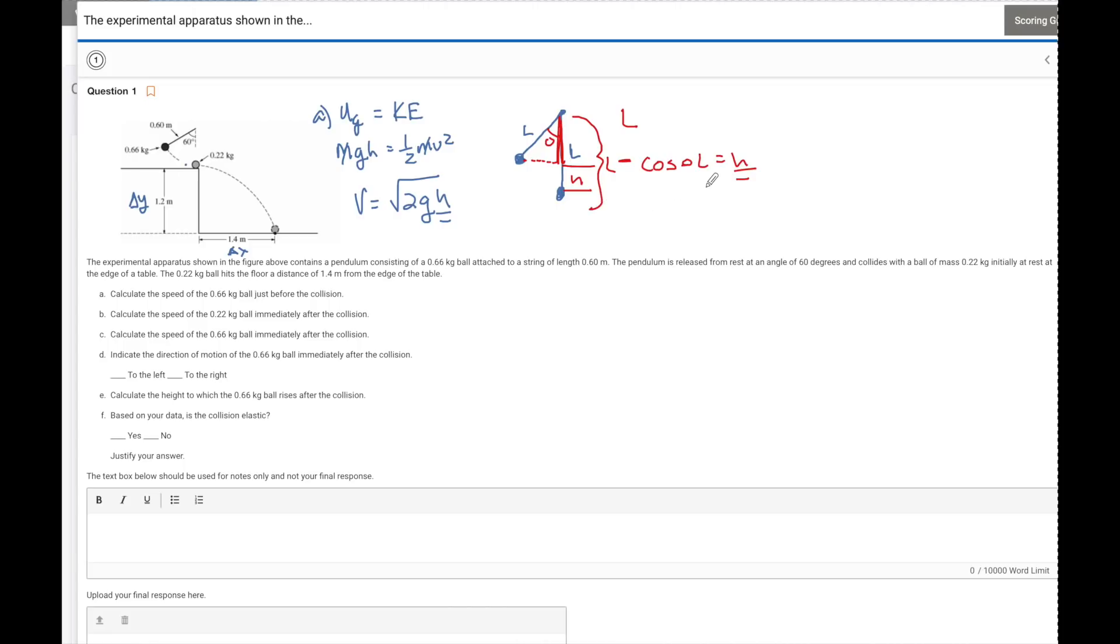So that's how we're going to find h here. So the length of the string is this, minus the cosine of 60 degrees. So h is going to equal 0.3 meters. So if I plug all this in here, we're going to get the velocity just before the impact is going to be 2.4 meters per second. And this is of the, I'll just call this the 0.66 ball initially.